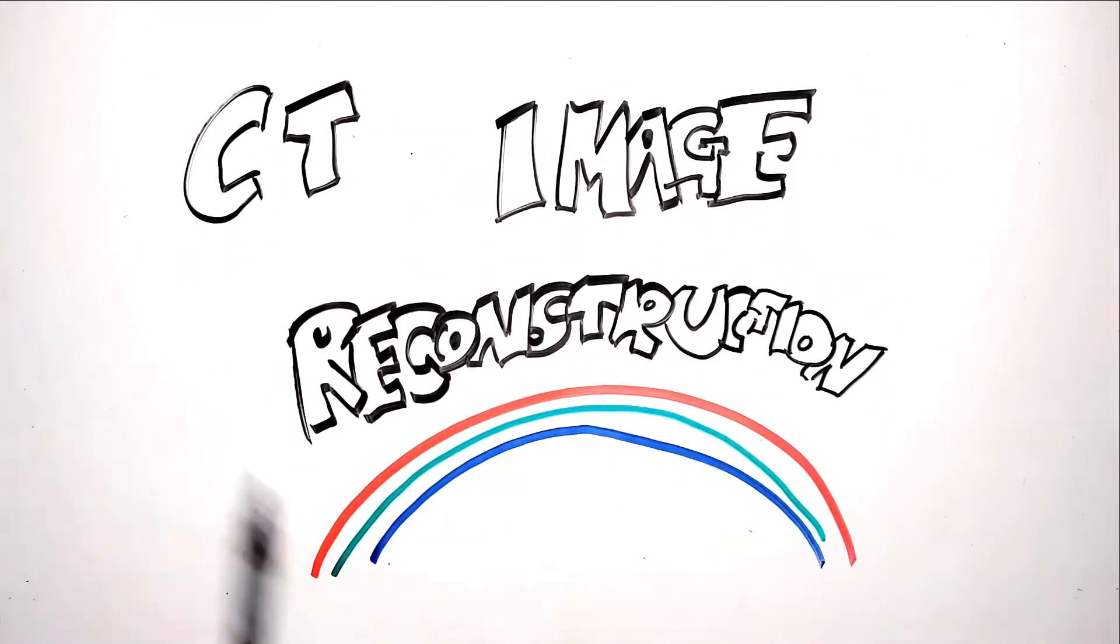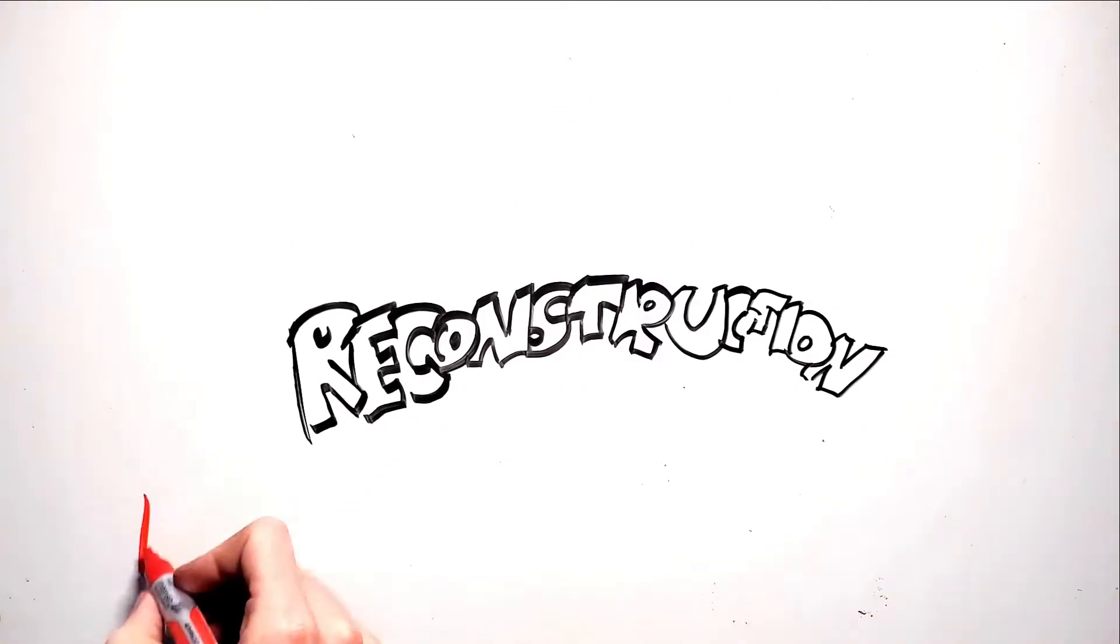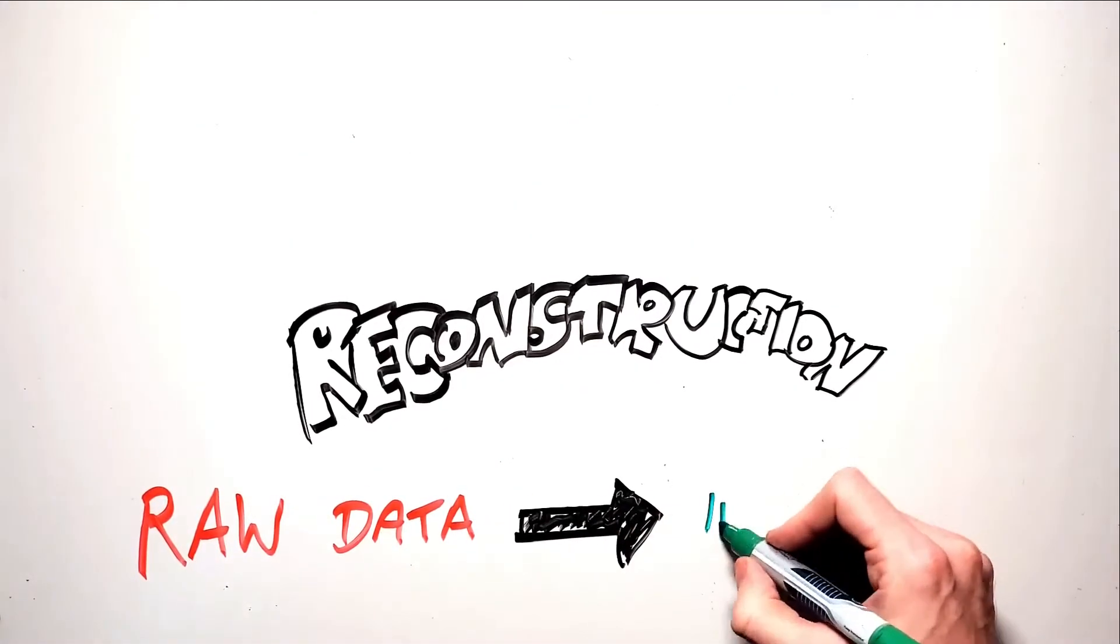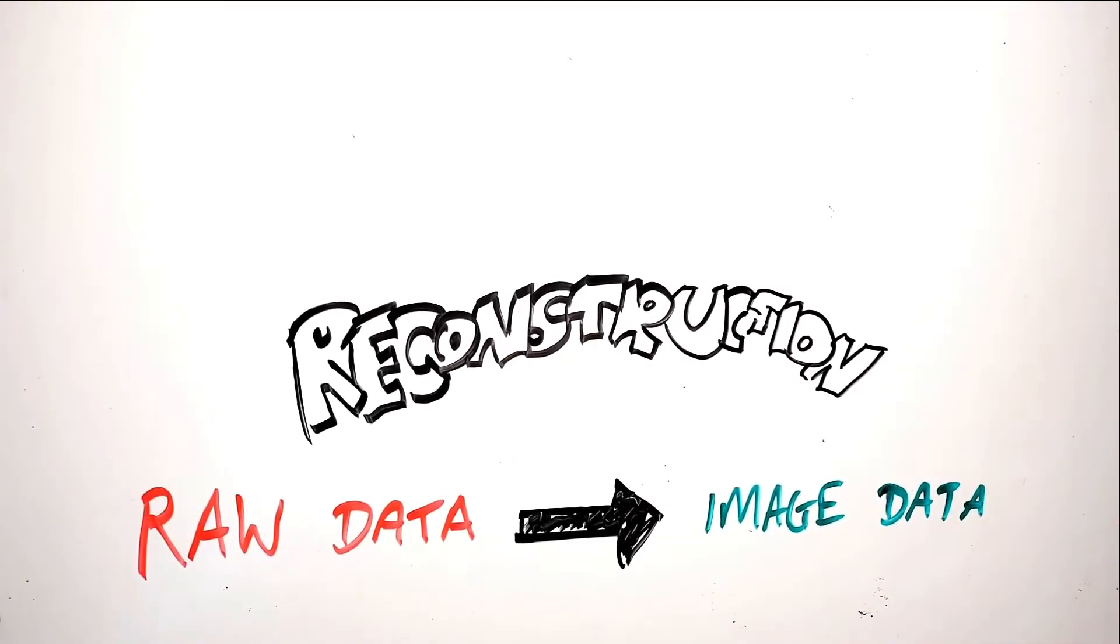Image reconstruction is the process of turning raw data collected by the detectors into image data which can be viewed on a screen. Both raw data and image data can be manipulated in different ways to create images with differing properties.